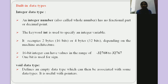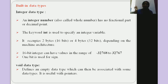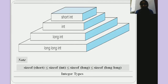The void data type means it's an empty data type — it doesn't return any value. We mostly use void with pointers; its importance will be explained in the pointers section. Void means it doesn't have anything; it's an empty data type.